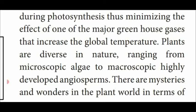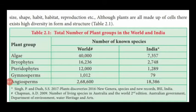Plants show great variability in nature, ranging from microscopic algae to macroscopic, highly advanced plants known as angiosperms. They show different variations based on size, shape, habit, habitat, and reproduction. Plants which are made up of cell walls show variability in form and structure, as given in the following table of total number of plant groups in the world and India.